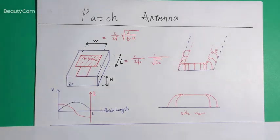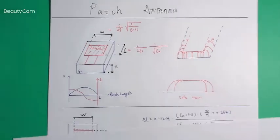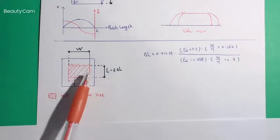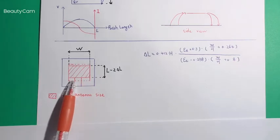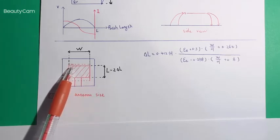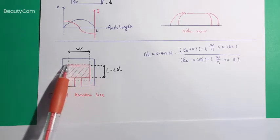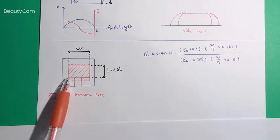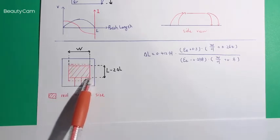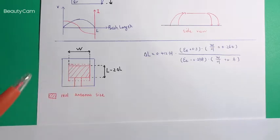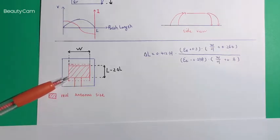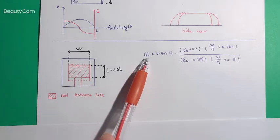Something I have to mention: these two edges can be regarded as open parts for a microstrip line. We know that for an open part, it has some capacitive effect — you can imagine there is a capacitor connected at the end of this metal part. This makes the physical length of the patch antenna a little bit shorter.